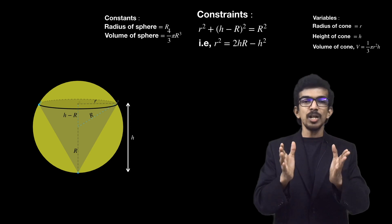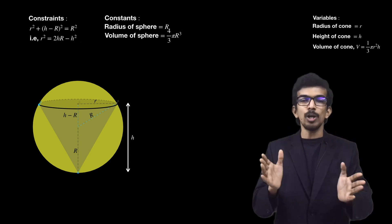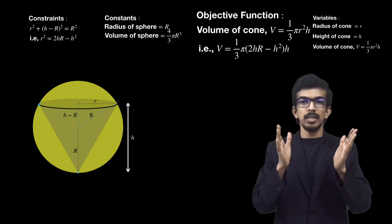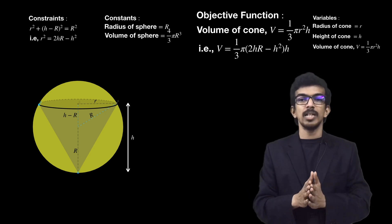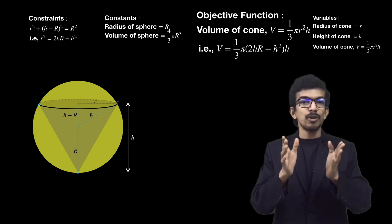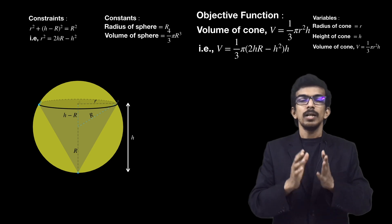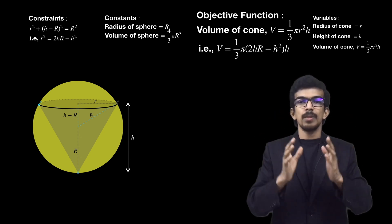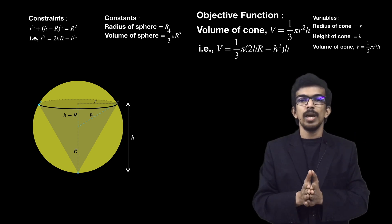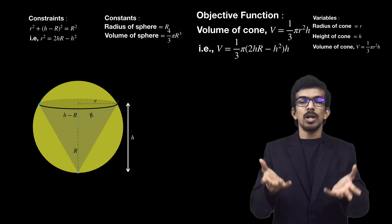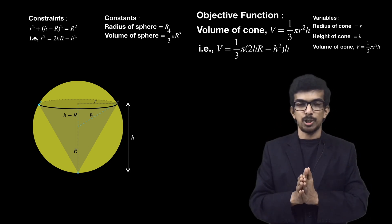Now the objective function, the quantity that needs to be maximized, is volume of the cone which is V = (1/3)πr²h. But there are two variables in this expression, so we need to get rid of one of the variables. I am going to replace r² with the expression we got from the constraint condition. So currently we have eliminated r and our objective function just contains one variable which is h.